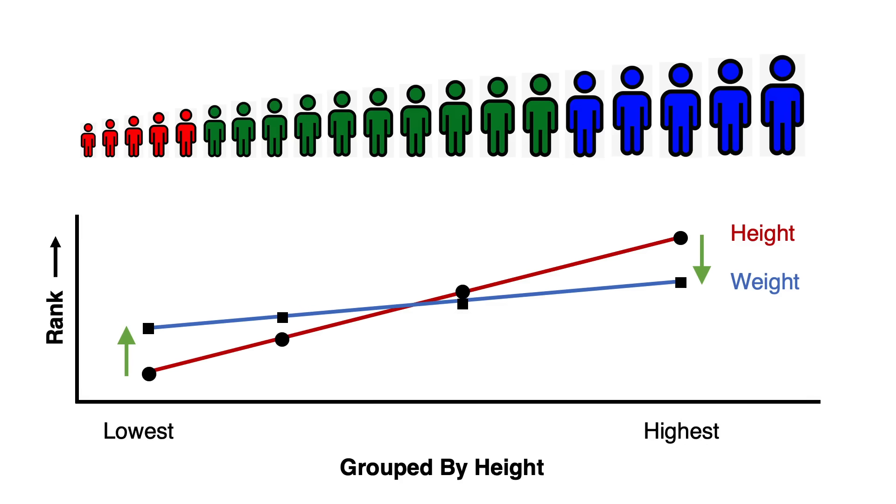So, unlike in the figure at the top here, the shortest people in red won't all be the lightest people. Some of them will be overweight or particularly muscular, for example. Similarly, the top end, the tallest people in blue, won't all be the heaviest people.